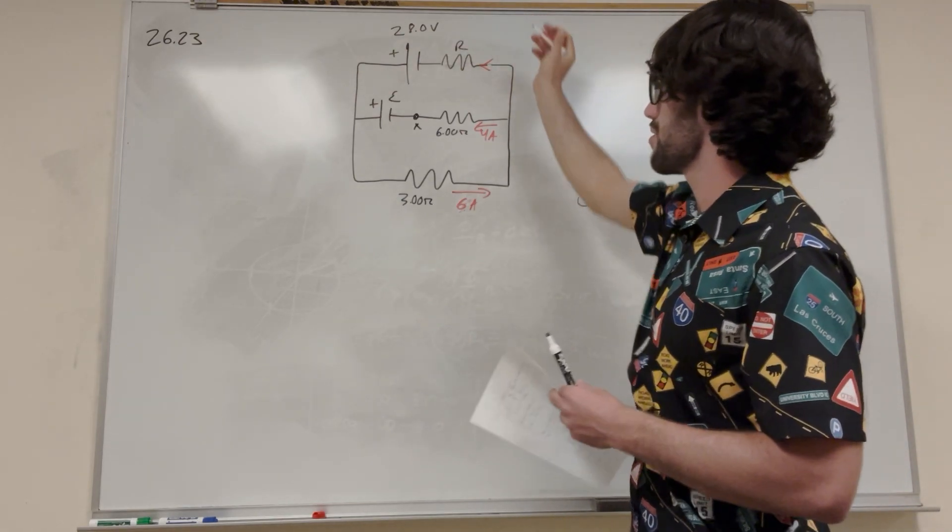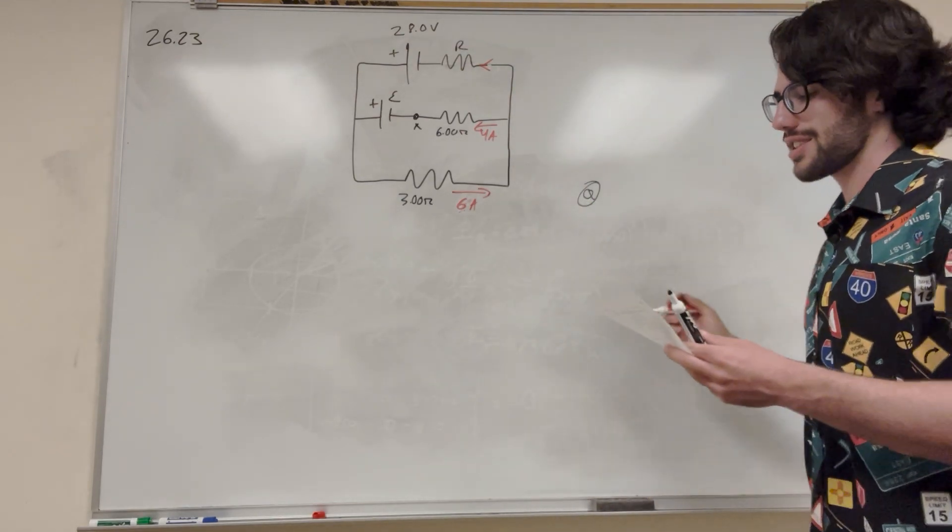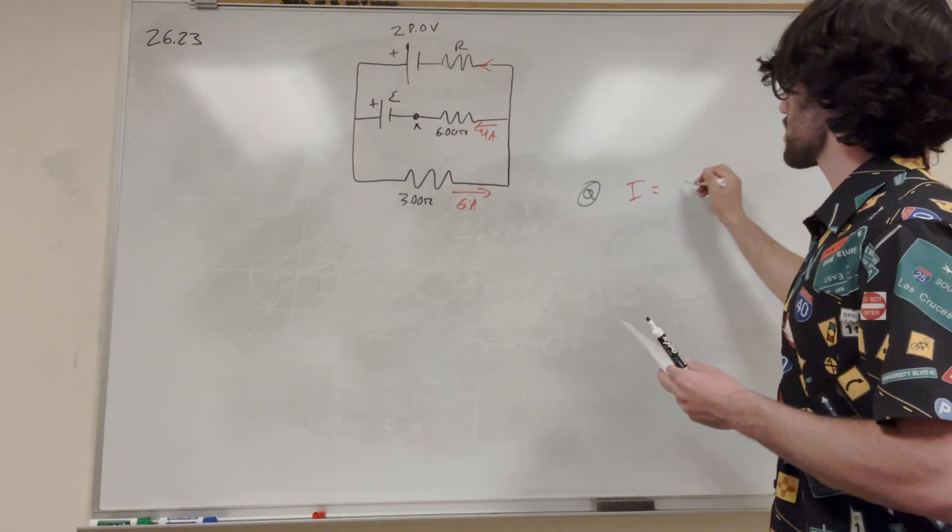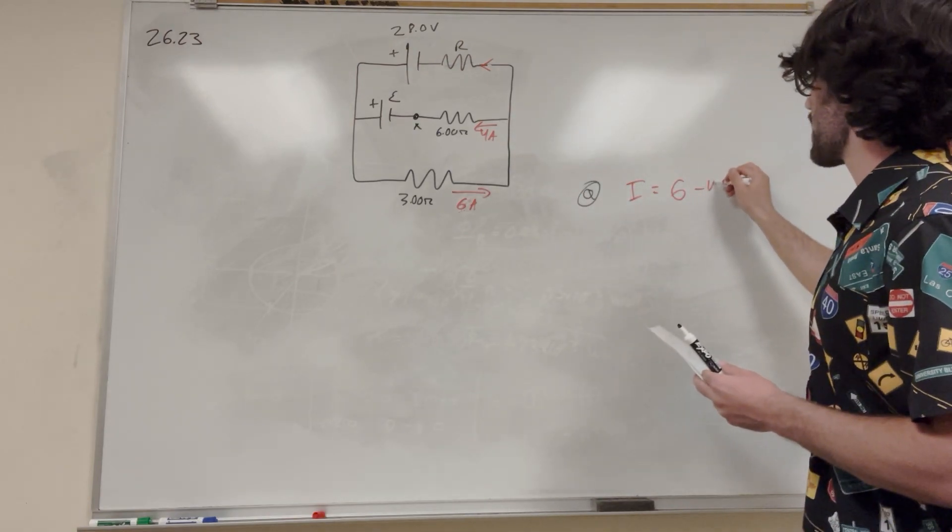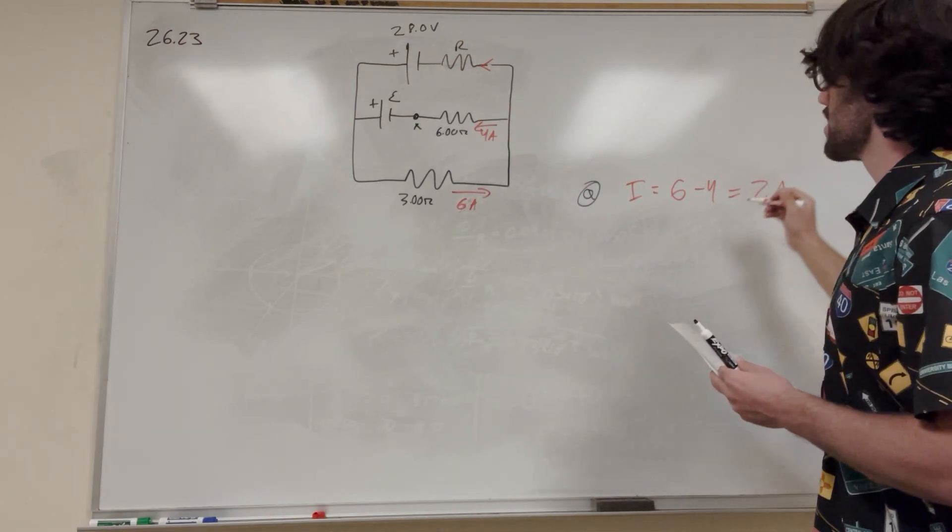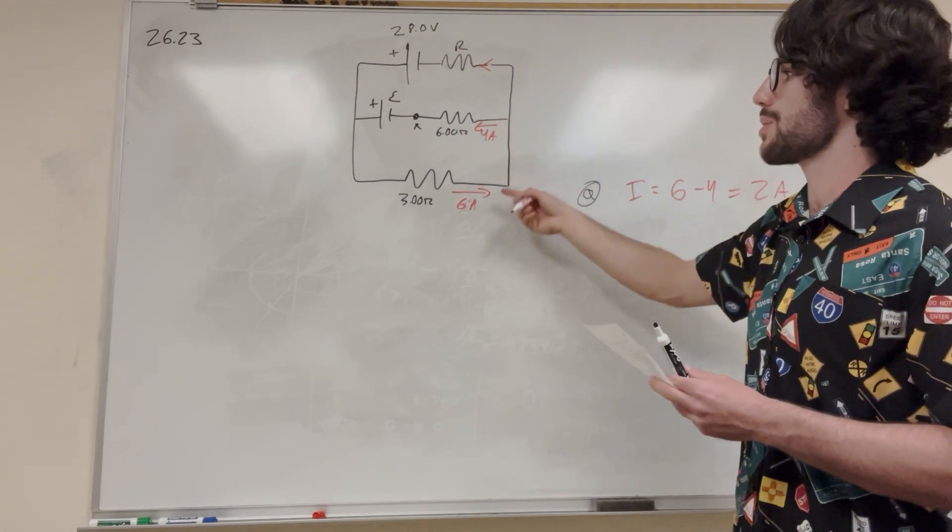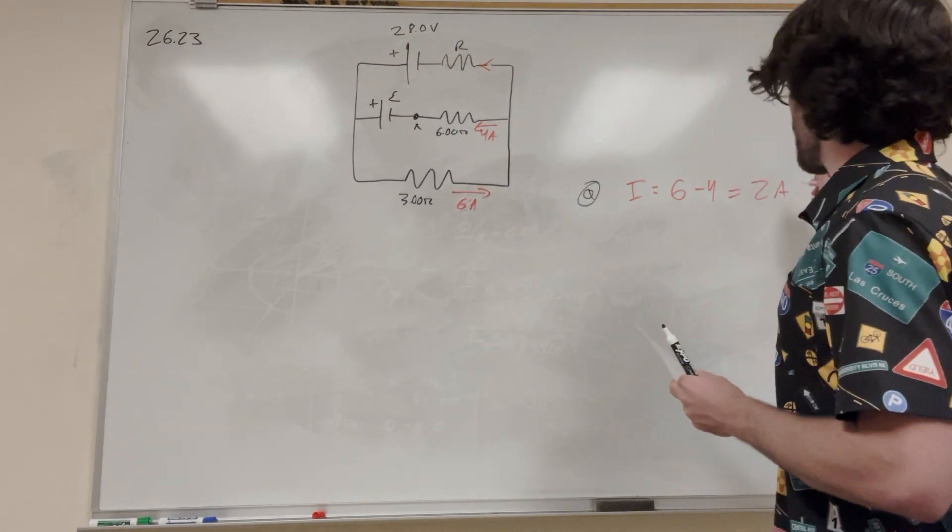So we're trying to find the current through R. So by Kirchhoff's laws, we know that I is equal to whatever goes in, so 6 goes in, and then 4 goes out, so it's going to be 6 minus 4, and it's going to be 2 amps. This is what goes through that, because 4 amps plus whatever's in here, 2 amps, has to equal 6 amps. So we have 2 amps.